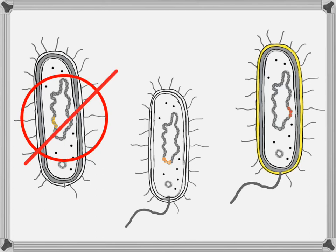What about a bacteria that has an almost non-existent cell wall and a very thin cell membrane? That's a bacteria that might be punctured more easily by chemicals in the environment. Maybe it's not as resistant to heat. From the bacteria's perspective, this is not a good thing.